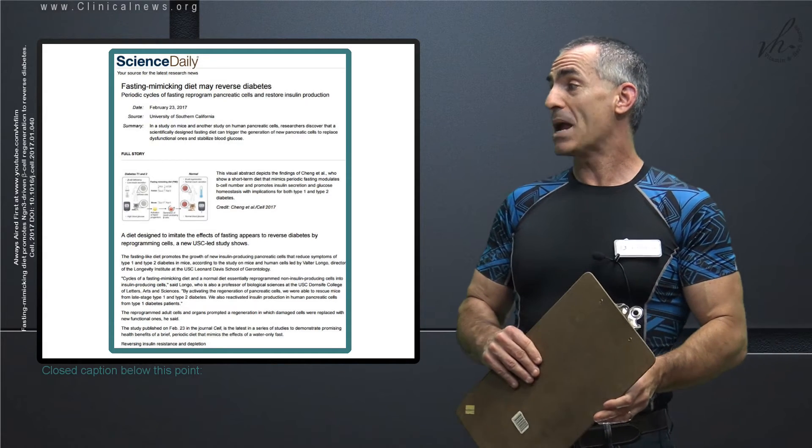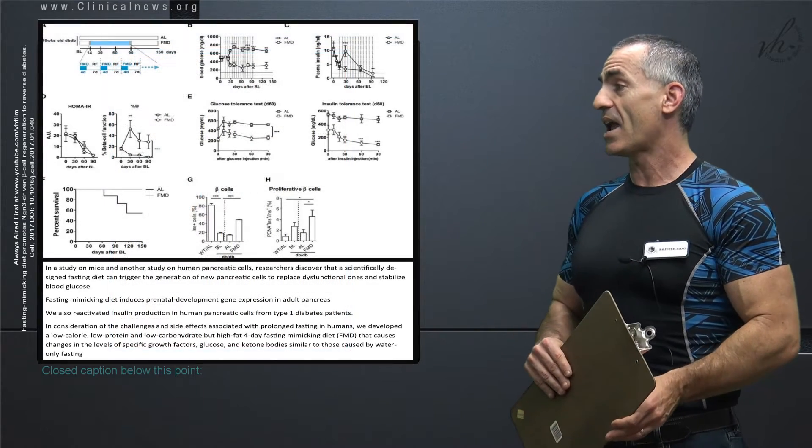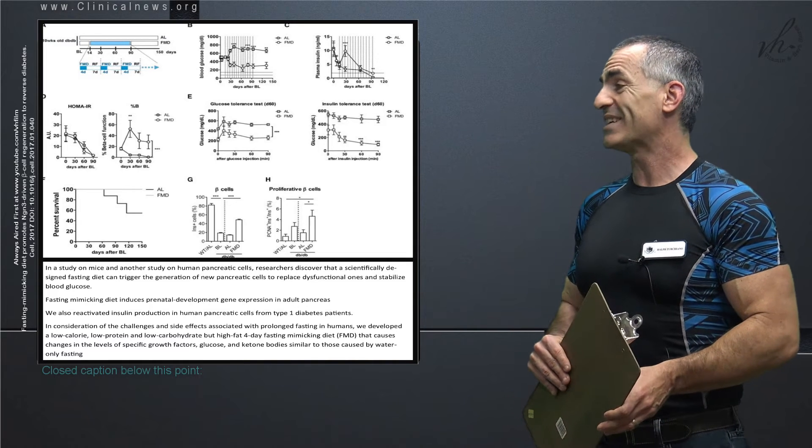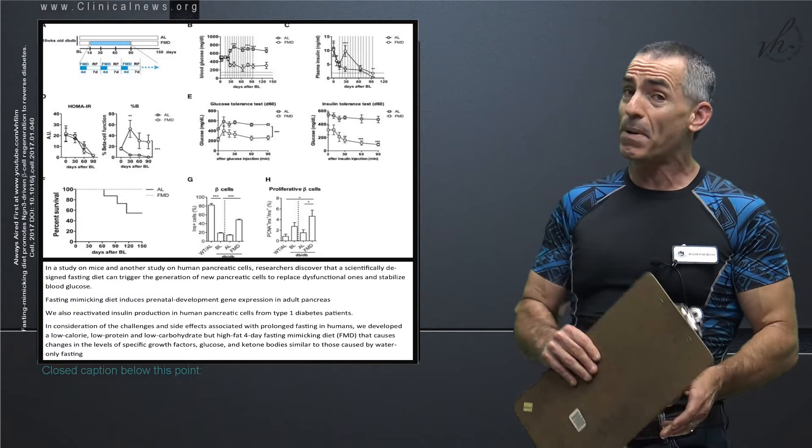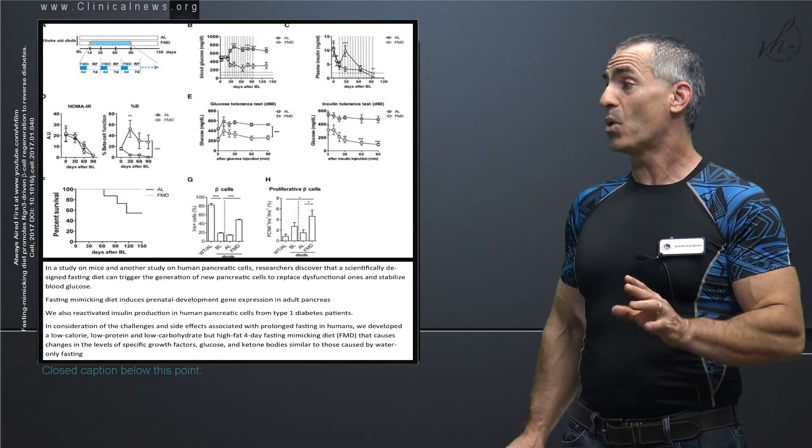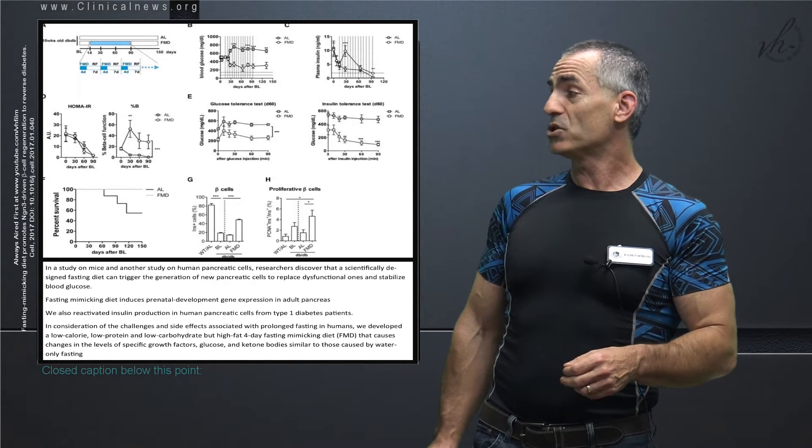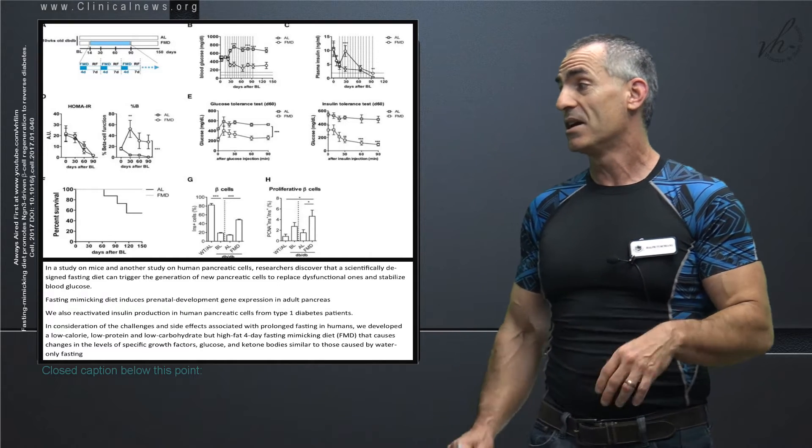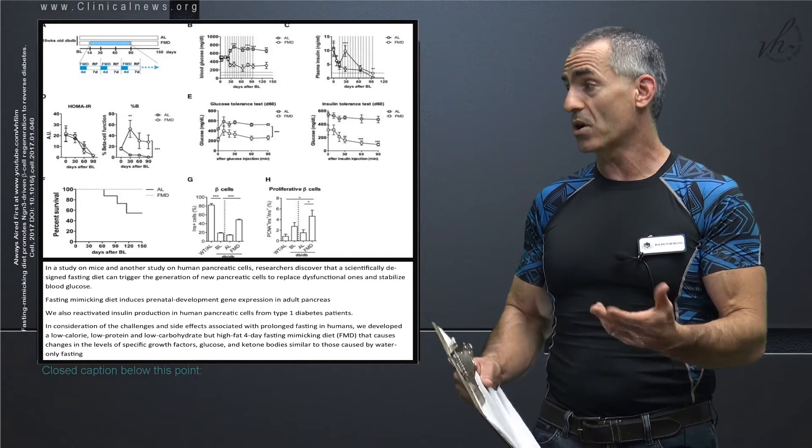In a study on human pancreatic cells, researchers discovered that a scientifically designed fasting diet can trigger the generation of new pancreatic cells in type 1 and type 2 to replace dysfunctional ones and stabilize blood glucose. Fasting mimicking diet induces prenatal development of gene expression in the adult pancreas, meaning your cells go back to the beginning and then they start over again from when they used to work.